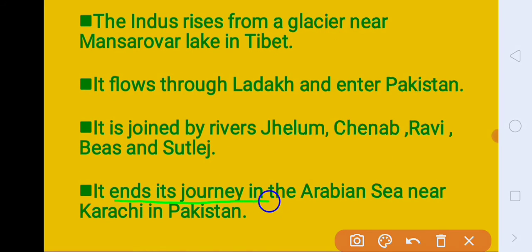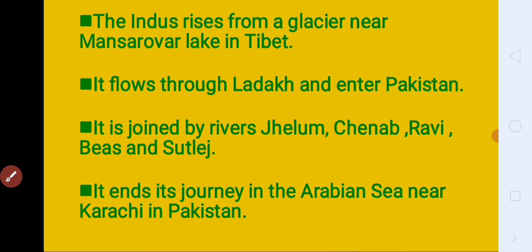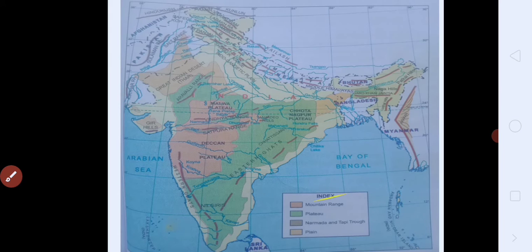It ends its journey in the Arabian Sea near Karachi in Pakistan. Or last mein Indus River kahaan par milti hai? Arabian Sea mein — Karachi ek city hai Pakistan mein, vahaan par. It ends its journey in the Arabian Sea. Now look at the map.